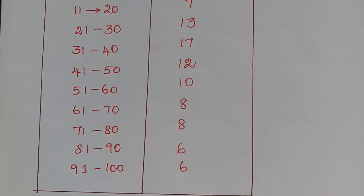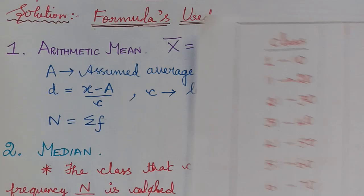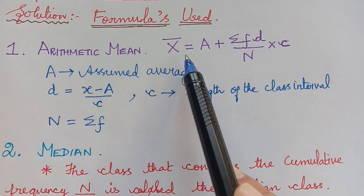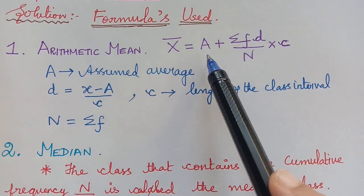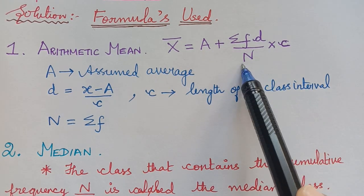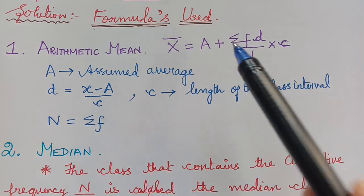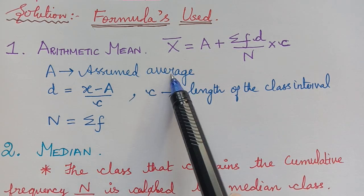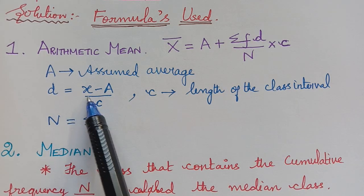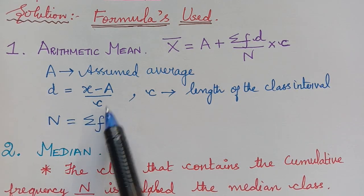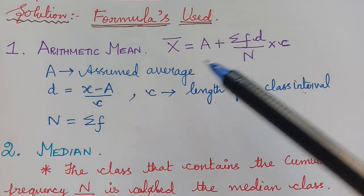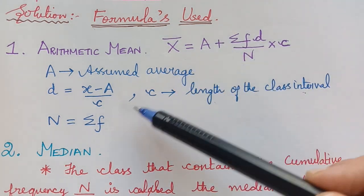First we shall learn the formula to find the arithmetic mean, median and mode. The arithmetic mean for grouped data is given by x-bar equals capital A plus (summation FD divided by capital N) multiplied by C. Capital A is the assumed average taken from the mid values of the class intervals. D equals (x minus capital A) divided by C, where C is the length of the class interval, and capital N is the summation of all the frequencies.